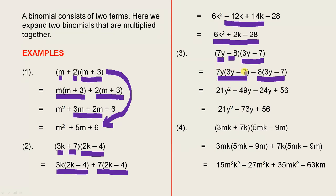When we expand that, and then we expand that, we get 21y squared minus 49y minus 24y plus 56. Remember, minus times minus gives you plus. These are the like terms here. So we get 21y squared minus 73y plus 56.